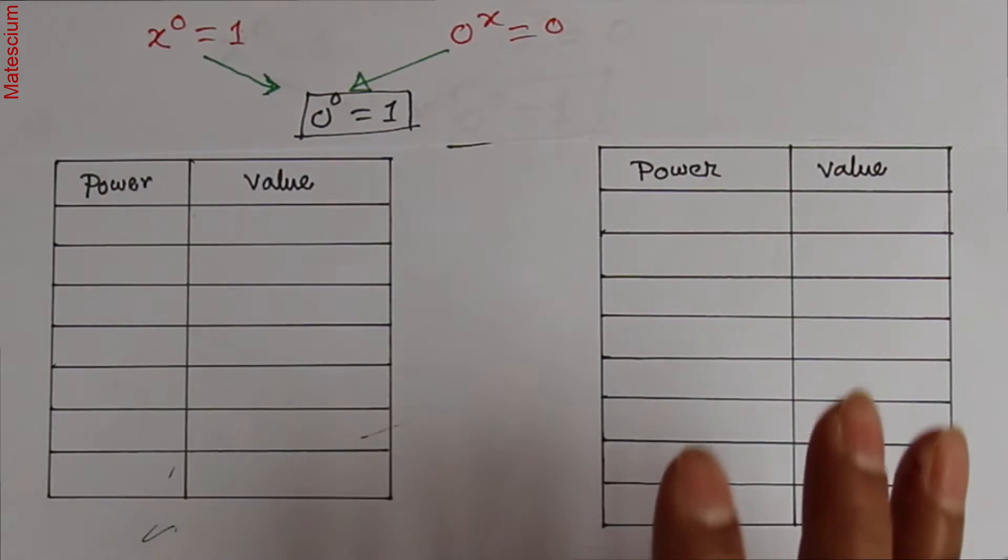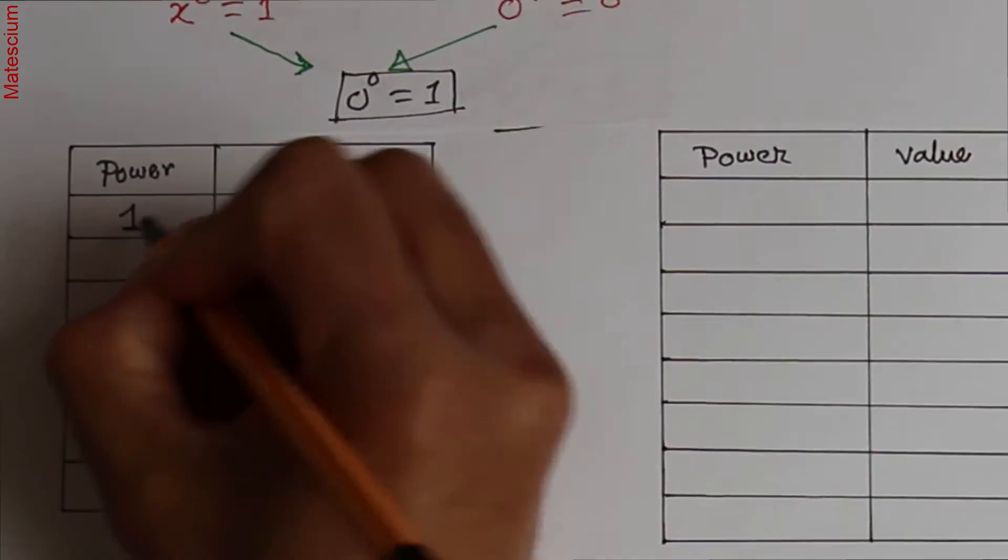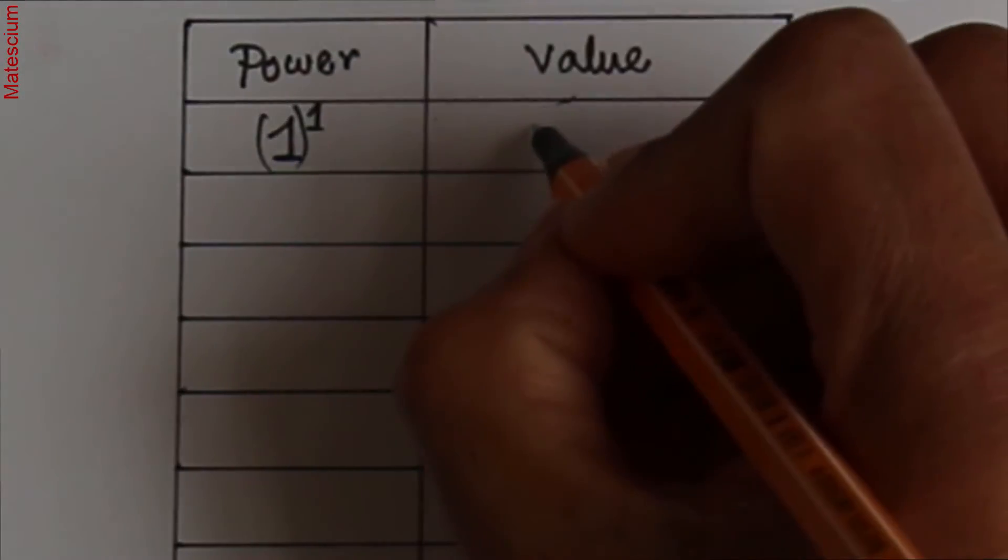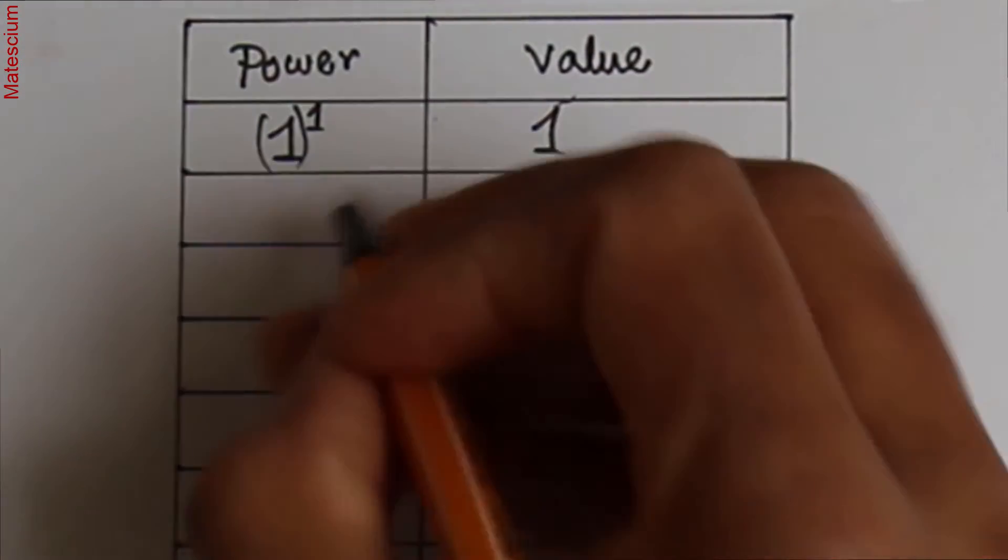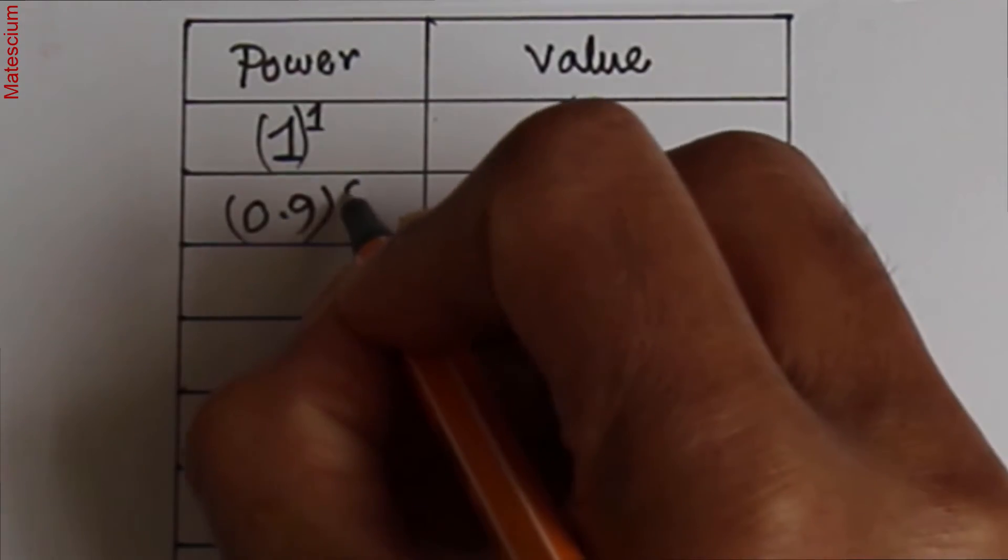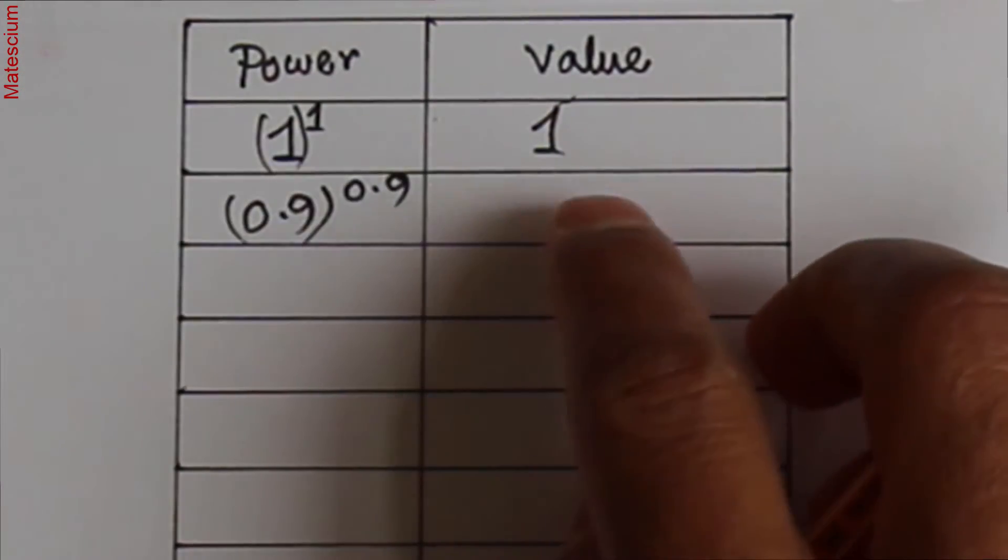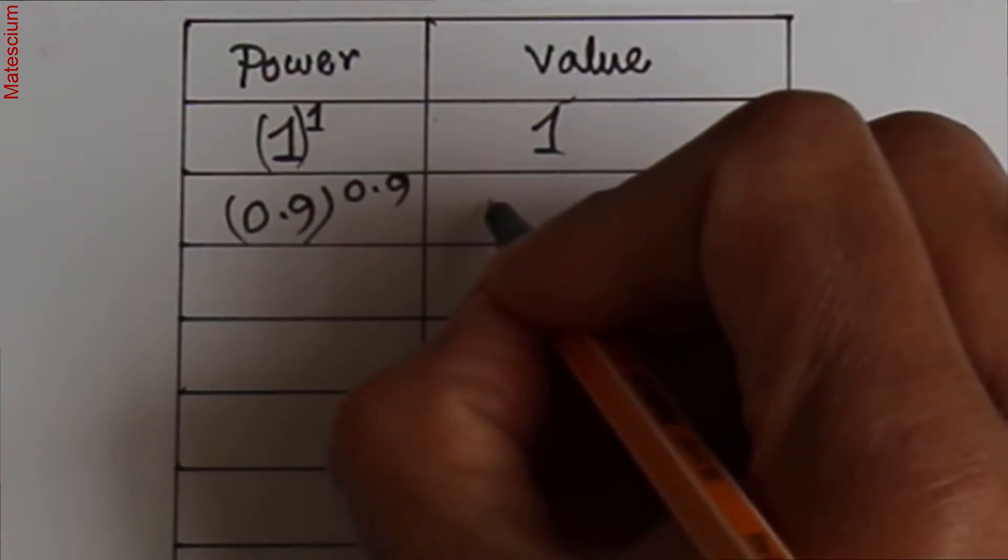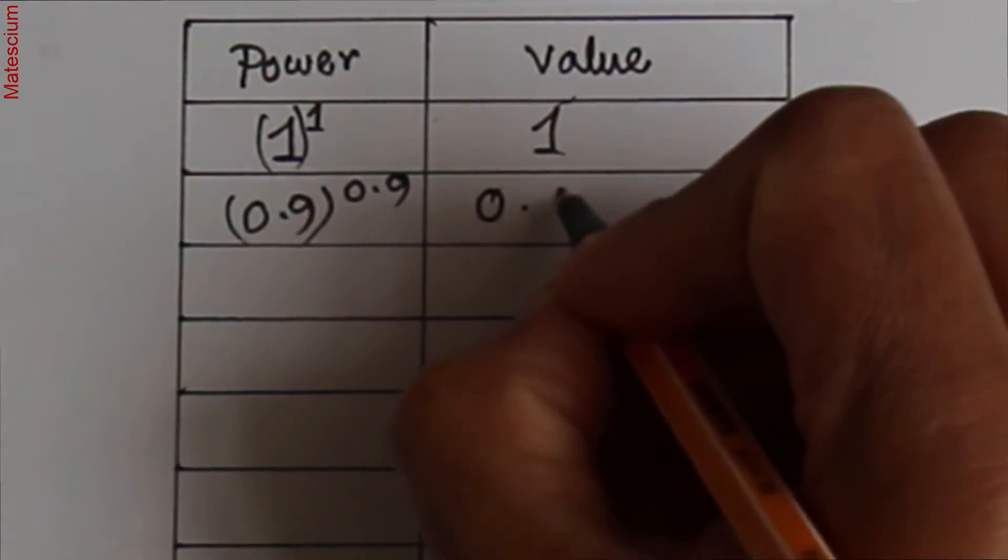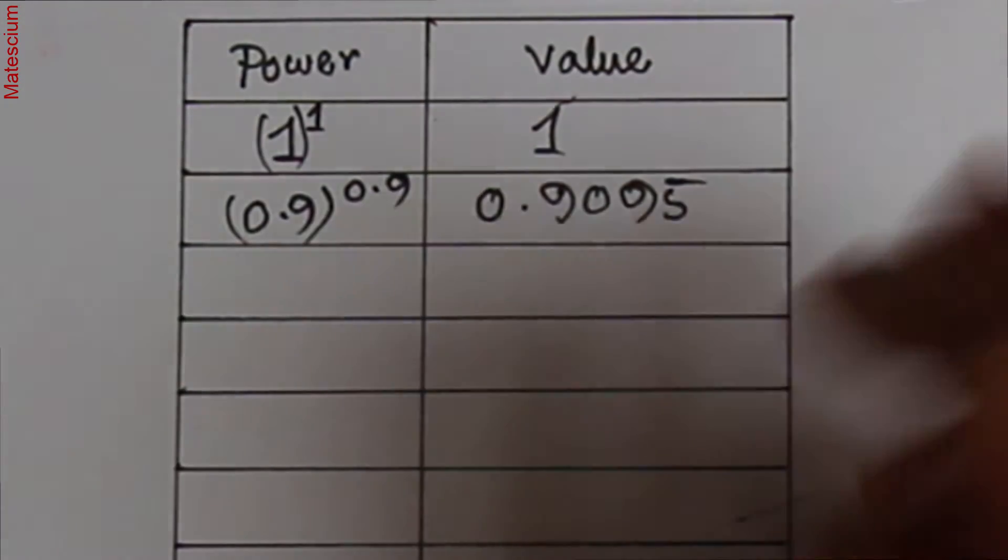So what I am going to do? Let's consider 1 to the power 1. If you use your calculator, it equals 1. I am reducing this power to 0.9 to the power 0.9. If you use your calculator, you can see 0.9 to the power 0.9 is 0.9095, and there are some other numbers. I am considering only 4 digits after the point.